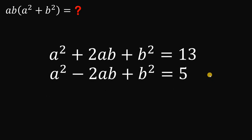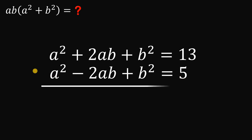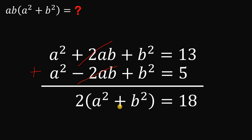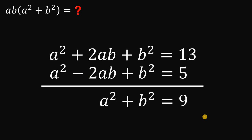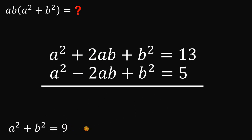Now let's add these two squared equations. The 2ab and negative 2ab cancel out, leaving 2a squared plus 2b squared, which is 2 times the quantity a squared plus b squared, equal to 13 plus 5, which is 18. Dividing both sides by 2, we get a squared plus b squared equals 9.